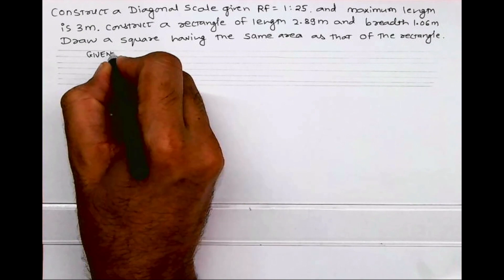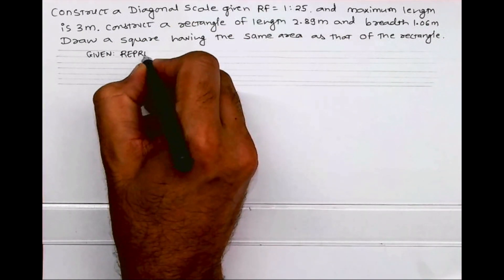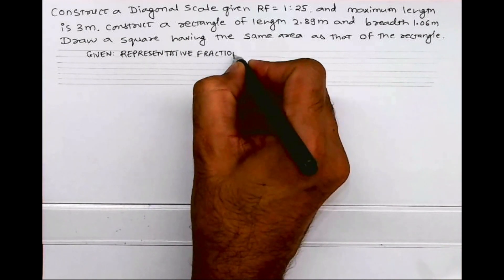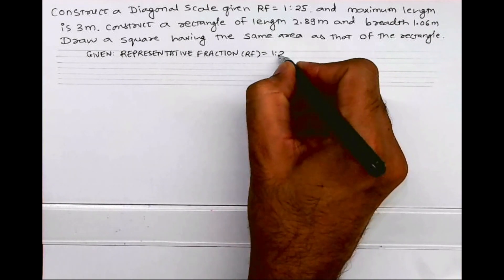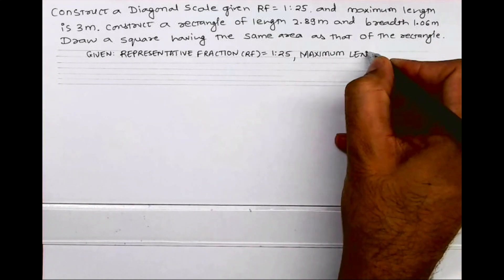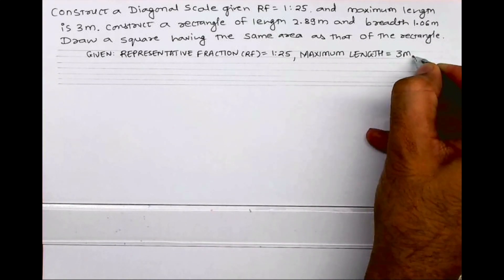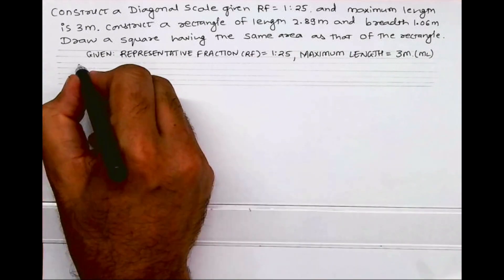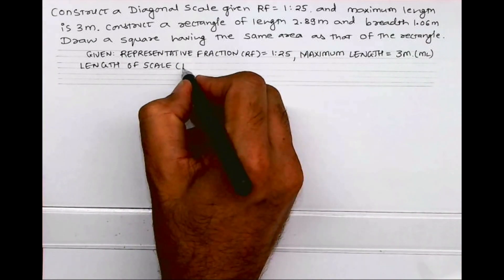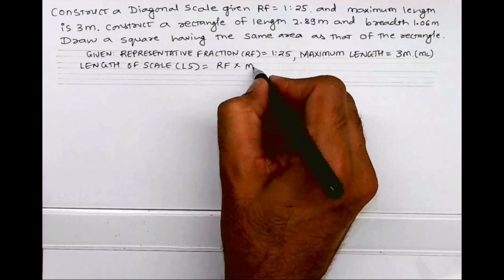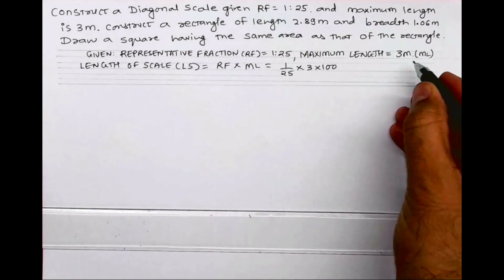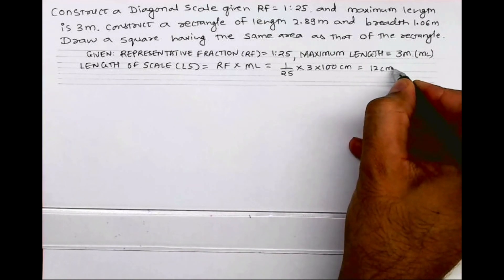First we'll write the given data. The representative fraction is 1 is to 25. After that, maximum length is 3 meters. We know the formula: length of scale is equal to RF into maximum length. So RF is 1 upon 25 into maximum length 3 meters, that is 3 into 100, which will be 12 centimeters.